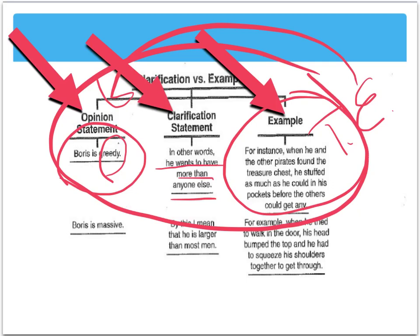Boris is greedy. In other words, he wants to have more than anyone else. For instance, when he and the other pirates found the treasure chest, he stuffed as much as he could in his pockets before the others could get any. So you have a great start to a paragraph. Next thing, you could do another example. You would need to do your reasoning, but that's a really good paragraph.